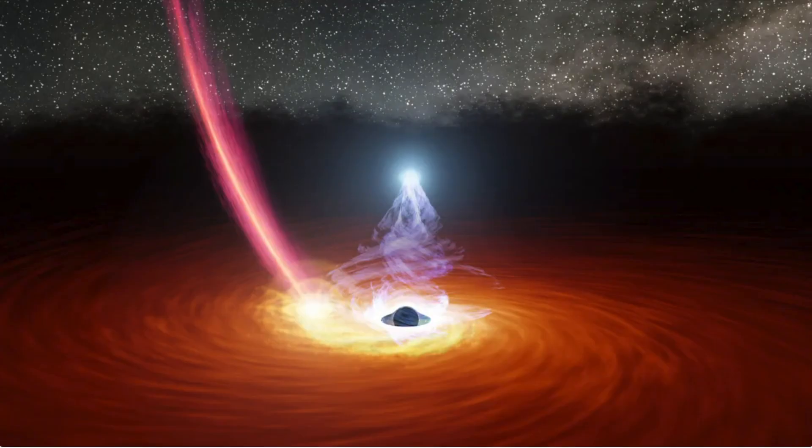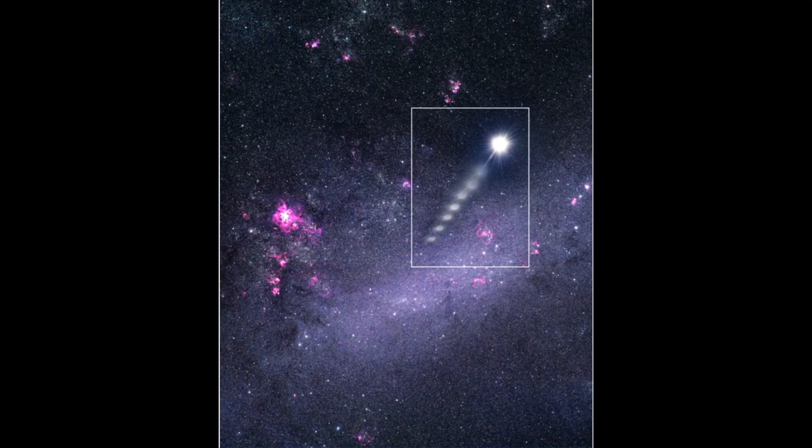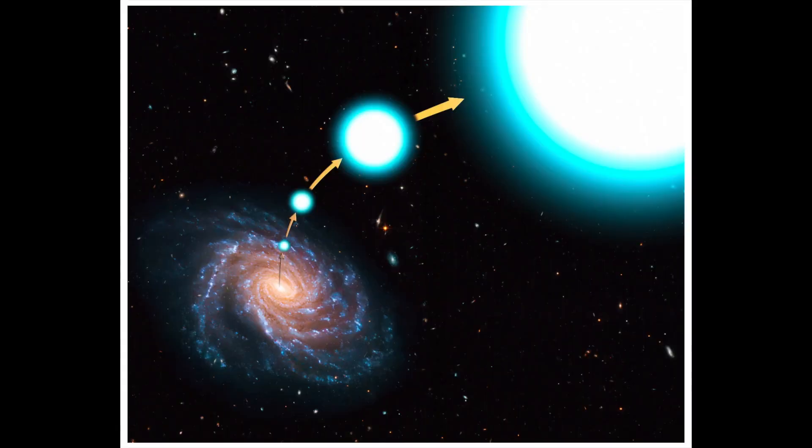You've heard of rogue planets floating through the universe untethered to any solar system? Now meet rogue stars which drift through space with no galaxy to call home. A new study has come to the startling conclusion that as many as half of all stars in the universe may be rogue, having been ejected from their birth places by galaxy collisions or mergers.